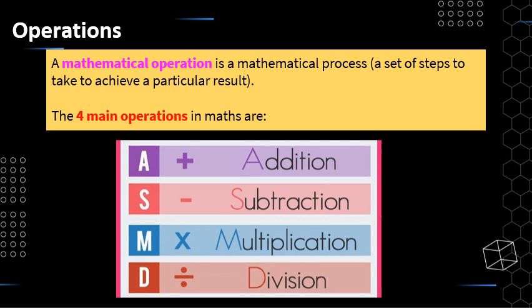A mathematical operation is a mathematical process — a set of steps to take to achieve a particular result. There are four main operations in maths: addition, subtraction, multiplication, and division. We know there's a relationship between these, particularly between addition and subtraction — they are inverse operations, the opposite of one another.